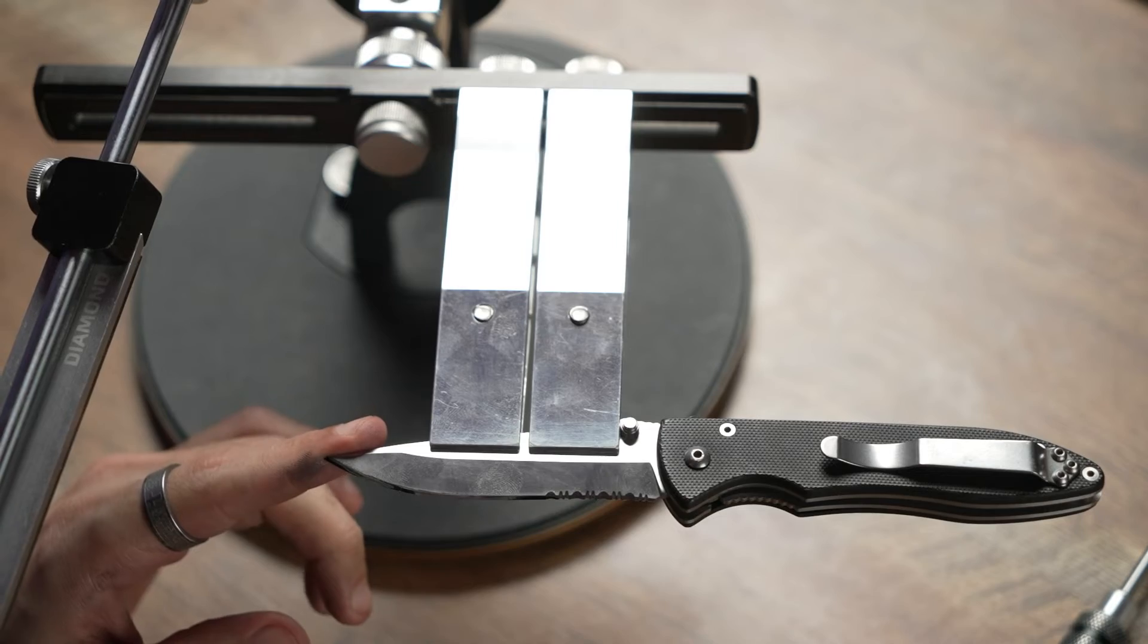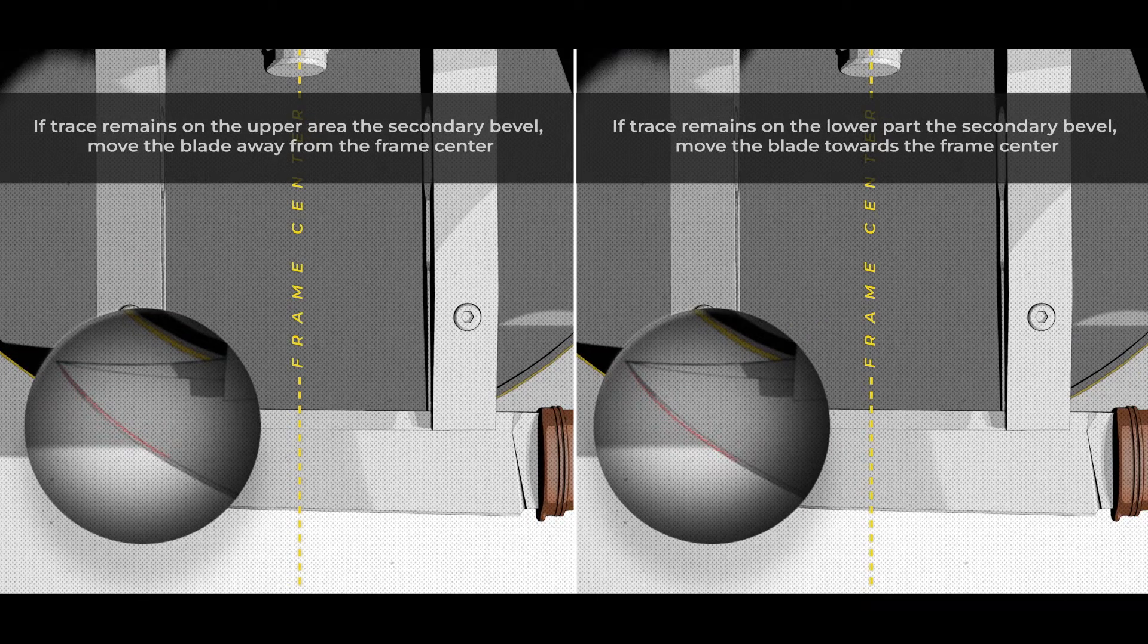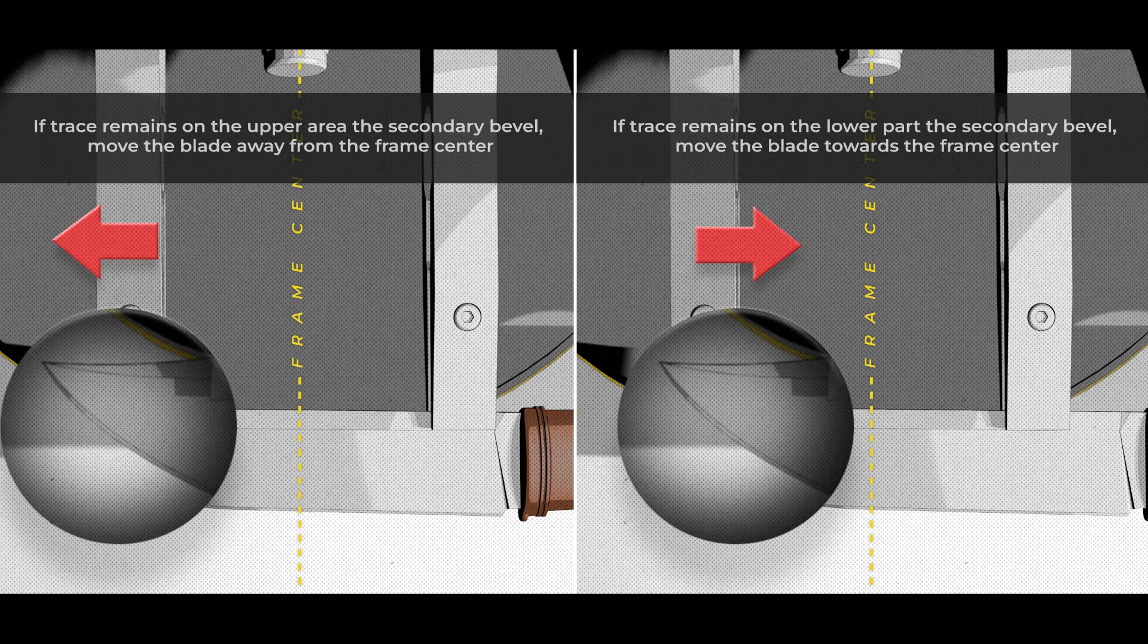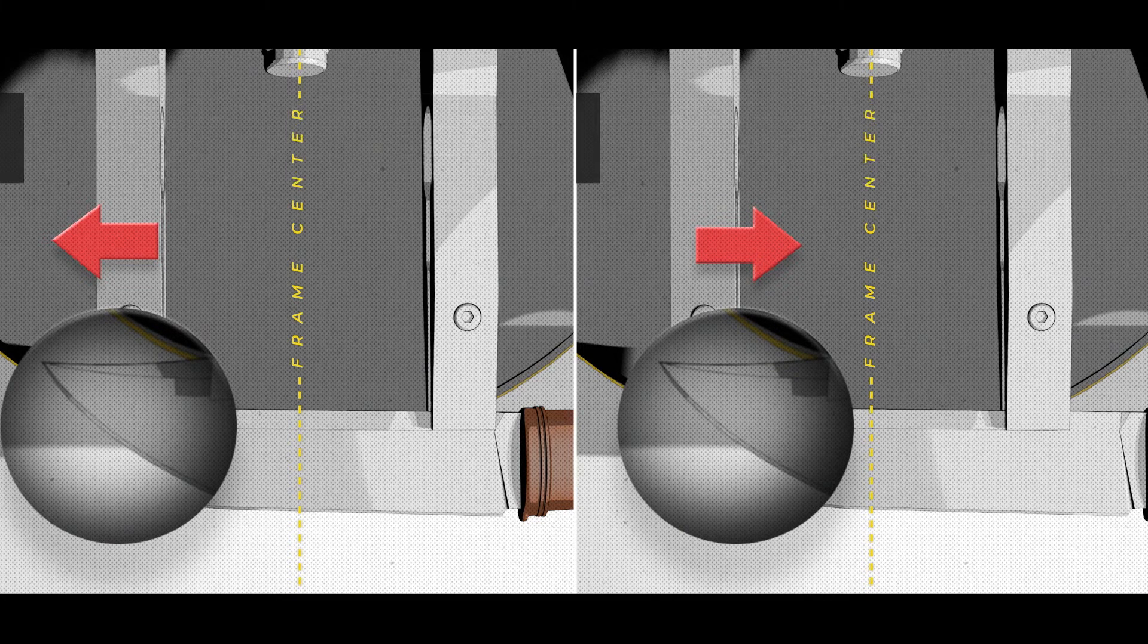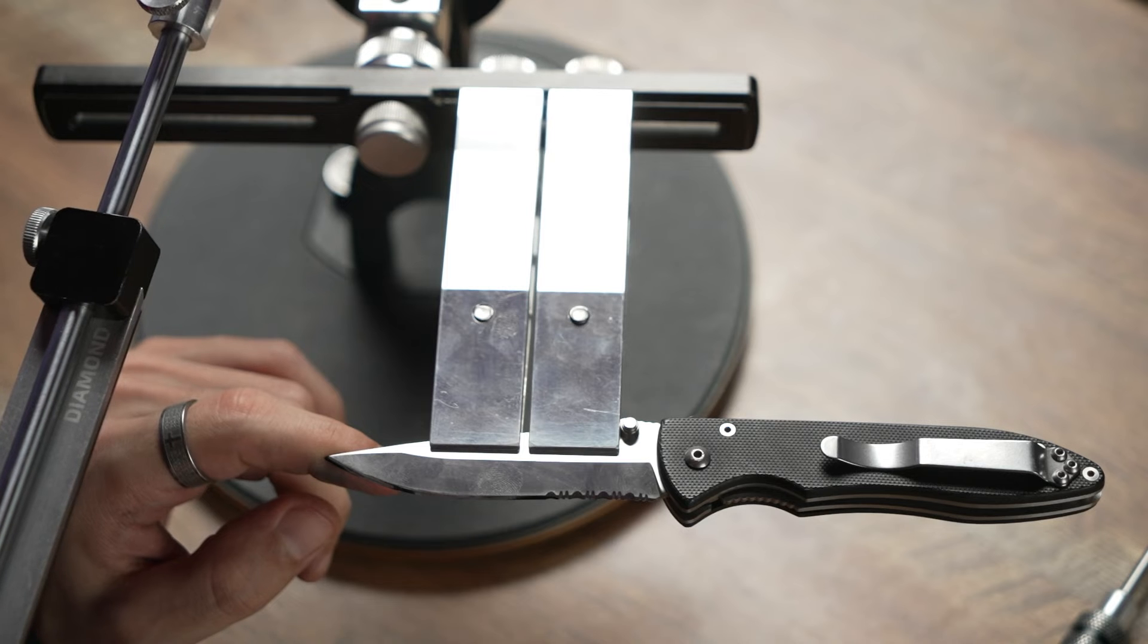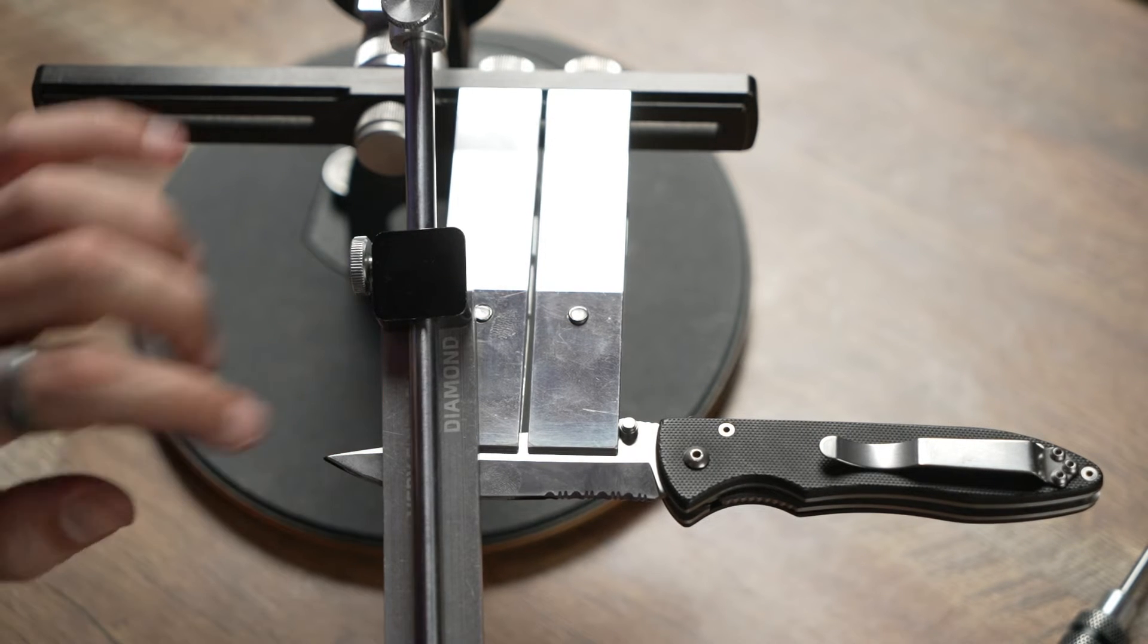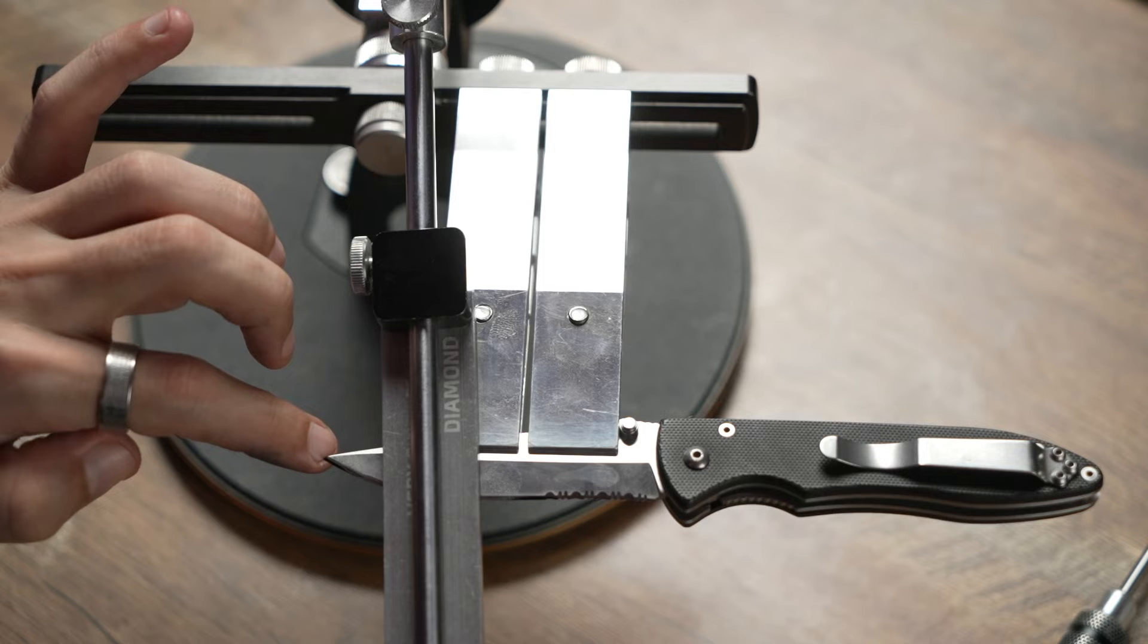As we move the tip of the knife closer to the axis of rotation of the frame that holds the clamps, the bevel on the tip will be more narrow, and if we move it to the opposite side, we will make the bevel wider.